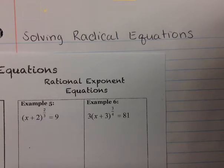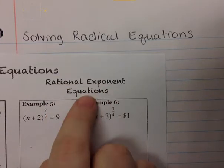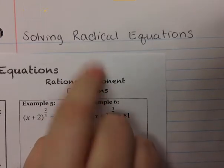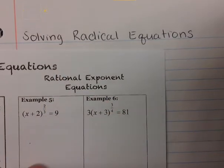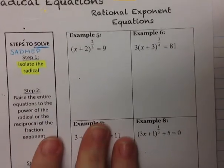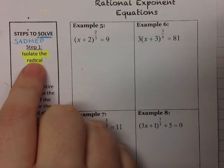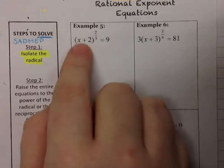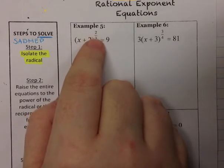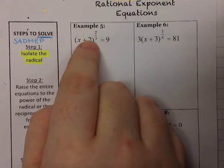This video is on solving radical equations. We're going to be solving rational exponent equations, which means we will deal with the inverse of radicals and rational exponents. The steps to solve are the same as for radical equations. The first step is to isolate the radical — in this case, the radical comes from the rational exponent. Whatever that exponent is attached to is what you need to isolate.